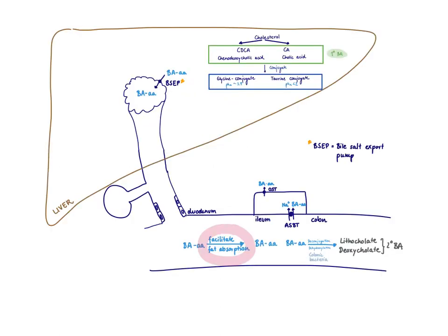Once we make these conjugated bile acids in the liver — abbreviated here as bile acid with an amino acid — we dump them into the hepatic duct via the B-SAP transporter. They then show up in the duodenum, where they do their job and facilitate fat absorption. Because they are so important, we don't just get rid of them. There is a transporter in the ileum, the ASBT — the apical sodium-dependent bile acid transporter — that takes up these bile acids again once they have done their job.